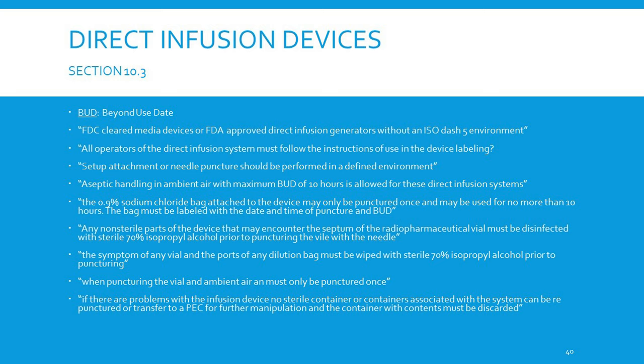Any non-sterile parts of the device that may encounter the septum of the radiopharmaceutical vial must be disinfected with sterile 70% isopropyl alcohol prior to puncturing the vial. The septum of any vial or dilution bag must be wiped with sterile 70% isopropyl alcohol prior to puncturing. When puncturing the vial in ambient air, it must only be punctured once. If there are problems with the infusion device, no sterile container associated with the system may be re-punctured — it must be transferred to a PEC for further manipulation or discarded.